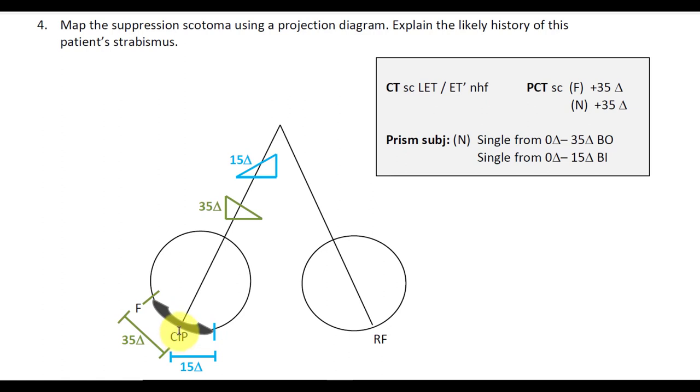Where is this old CIP? It's on nasal retina, beyond the current CIP. It's actually 35 plus 15 diopters away from fovea, so we're at 50 diopters away from the fovea.